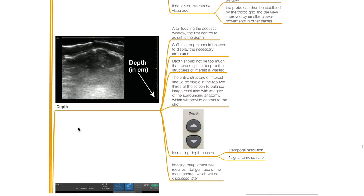After locating the acoustic window, the first control to adjust is depth. Sufficient depth should be used to display the necessary structures, but not so much that screen space deep to the structures of interest is wasted. The entire structure of interest should be visible in the top two-thirds of the screen to balance image resolution with imagery of the surrounding anatomy. Increasing depth causes reduced temporal resolution and increases signal-to-noise ratio. Imaging deep structures requires intelligent use of the focus control.